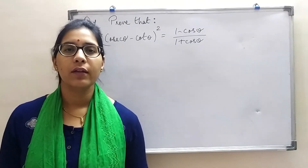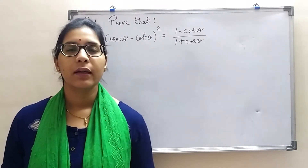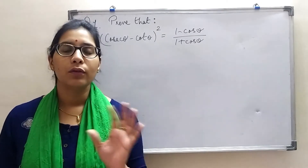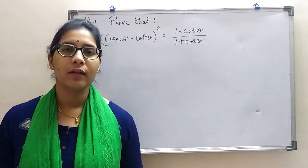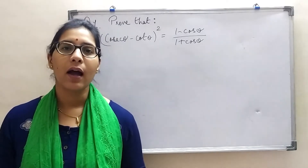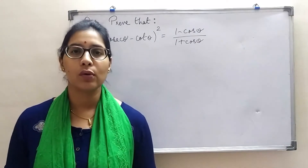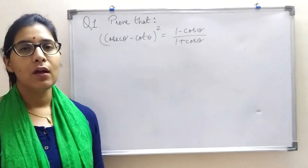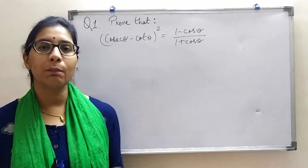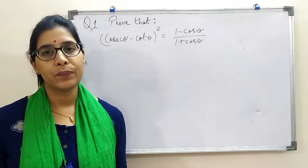Hello dear students, today we will deal with long answer type questions in the trigonometry chapter. In these questions, they will give you both sides — the left hand side and the right hand side — and we have to prove that LHS is equal to RHS. As I have taught you in previous videos, we have to take the LHS part, simplify it, and then prove LHS equals RHS.